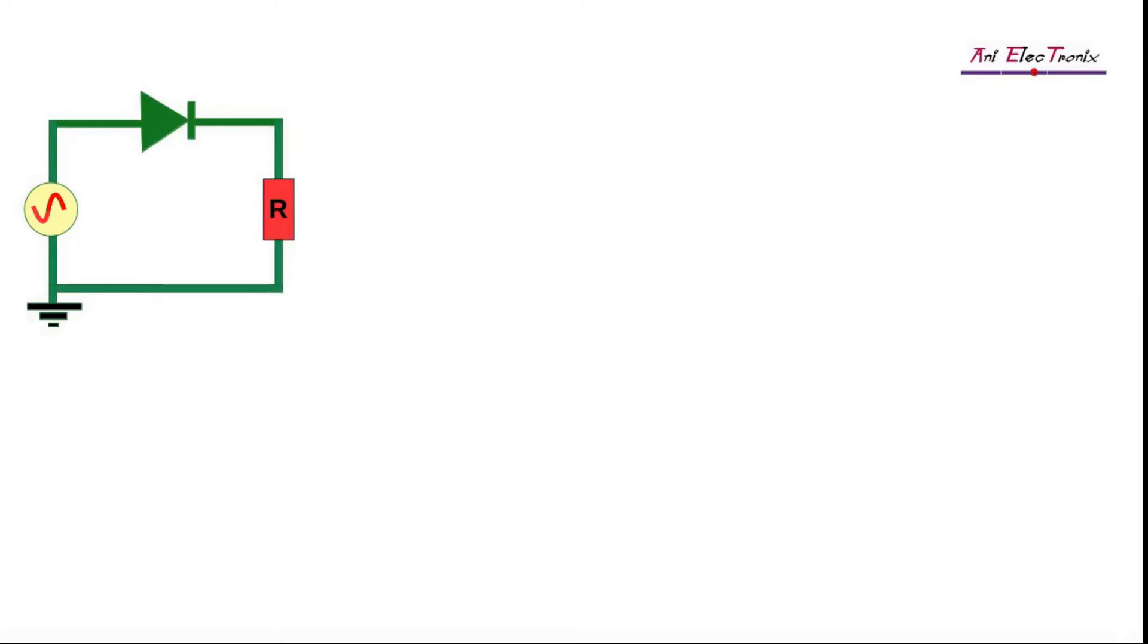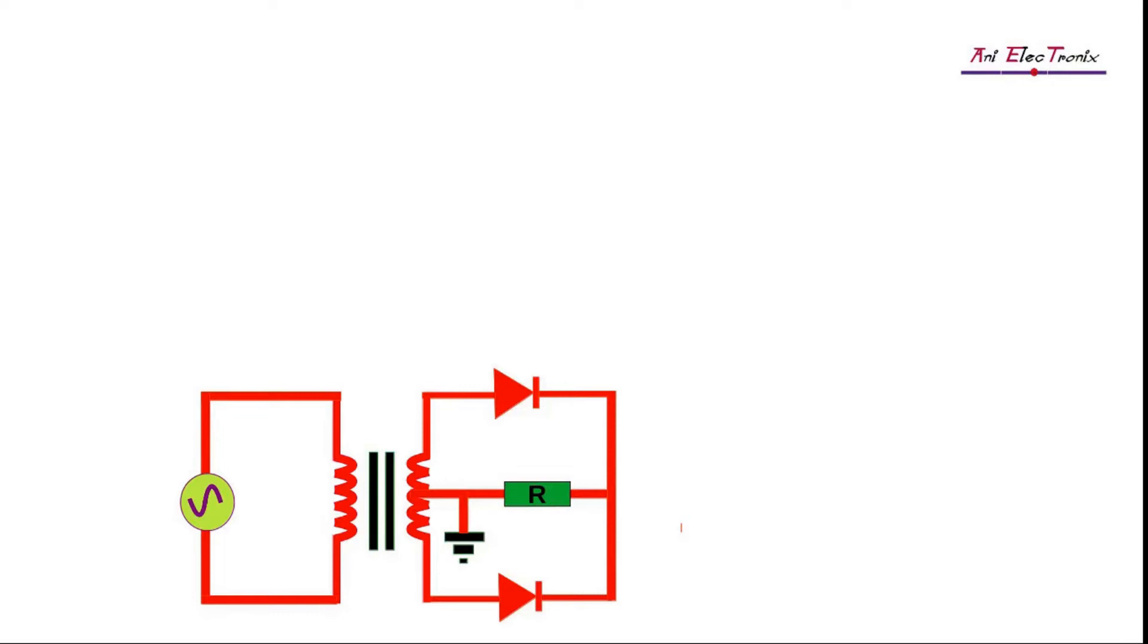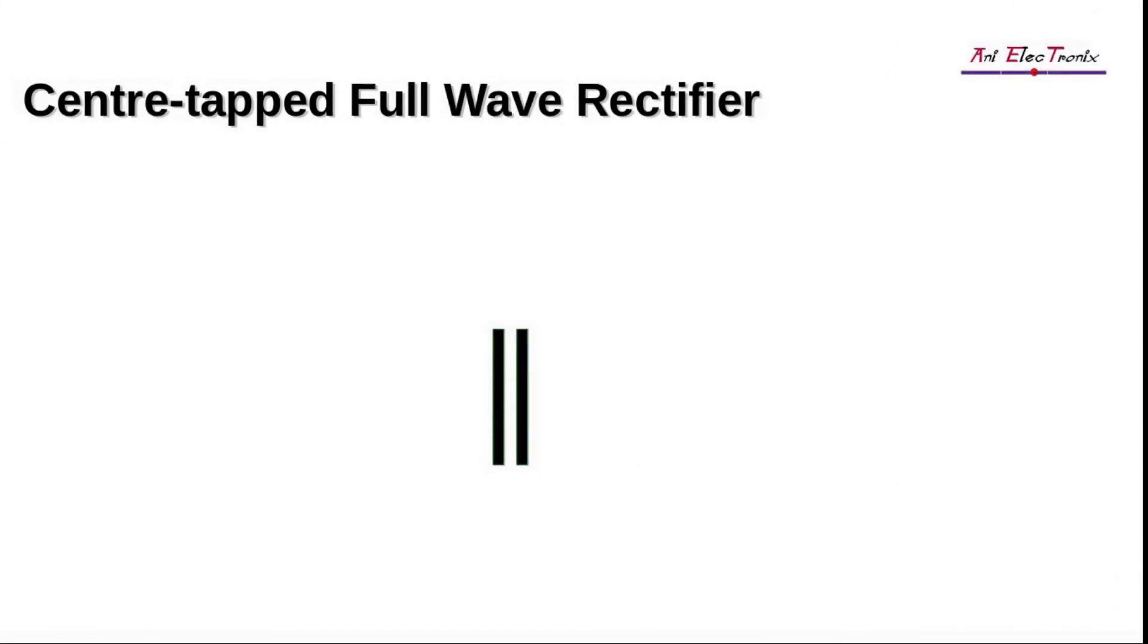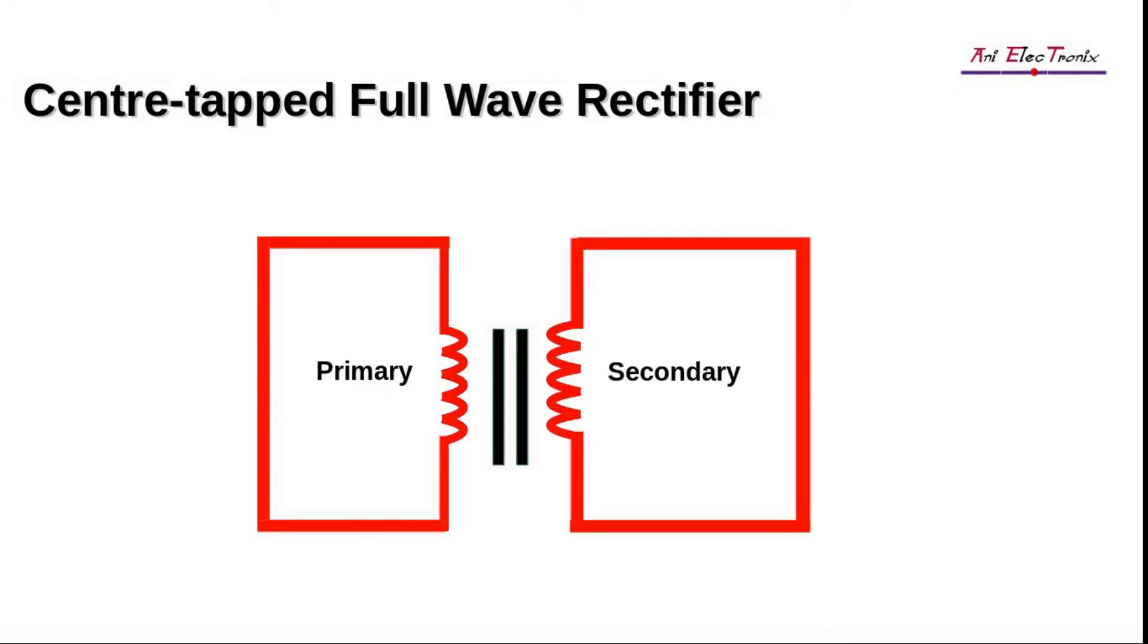Our next topic is full-wave rectifier. We will talk about the center tapped full-wave rectifier and the bridge rectifier. There are two types of windings in a transformer, primary and secondary. As a way to divide the secondary AC voltage into two equal and opposite directions, an additional wire is connected to the center of the secondary winding, also known as a center tapped transformer.